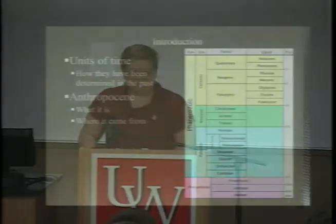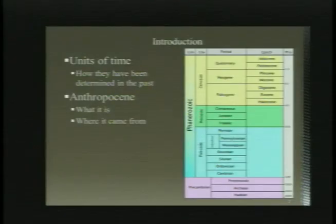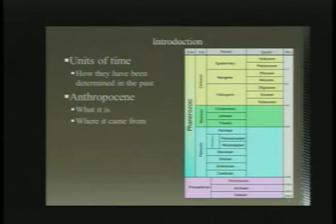Earth's history is divided into units of time called eons, eras, periods, and epochs. Geologic time intervals are often determined by the appearance or disappearance of organisms in the rock record. One of the most famous eras in Earth's history, due to the existence of dinosaurs, is known as the Mesozoic. Each of the time intervals you see are determined by global recordable changes in the biosphere that have been preserved in the rock record.